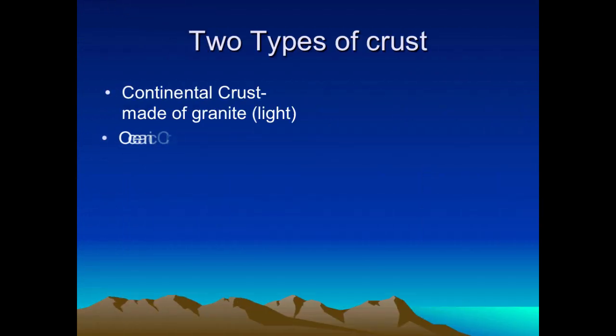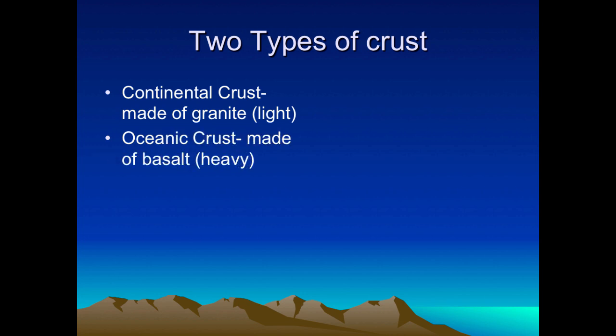There are two types of crust — this is something new, so definitely write this down. There is continental crust, which makes up land, and it is made of granite, which is very light and less dense. Then you have oceanic crust, which is at the bottom of the ocean floor, and it is made of basalt, which is very heavy. So the entire Earth's crust is divided into these two types: continental crust, which is land, and oceanic crust, which is at the bottom of the ocean.